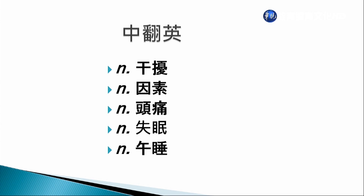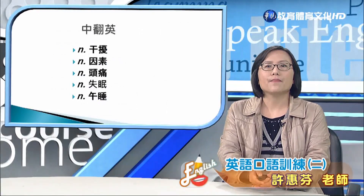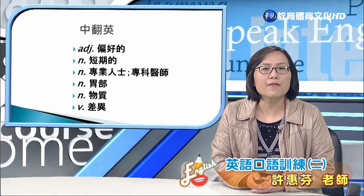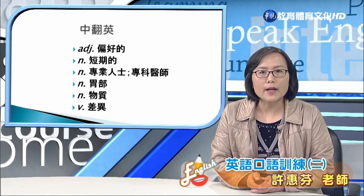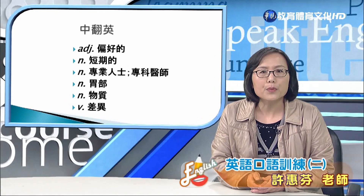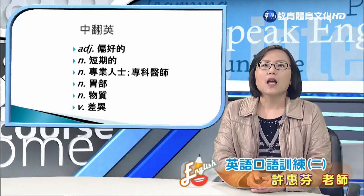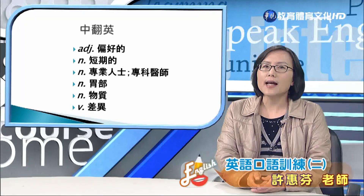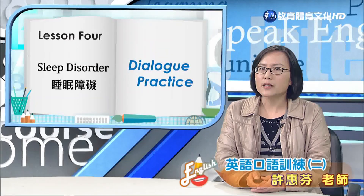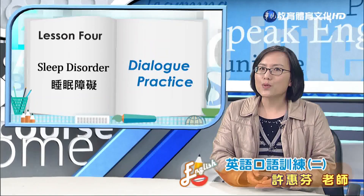現在我們來練習看中文說英文，把中文單字翻成英文：數量 Amount，平均 Average，呼吸 Breathing，長期的/慢性的 Chronic，失調 Disorder，干擾 Disturbance，因素 Factor，頭痛 Headache，失眠 Insomnia，午睡 Nap，偏好的 Preferable，短期的 Short-term，專業人士/專科醫師 Specialist，胃部 Stomach，物質 Substance，差異 Vary。以上就是我們今天所學的單字內容。